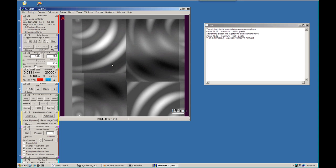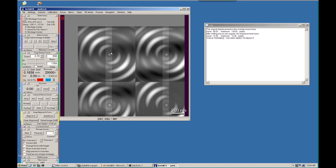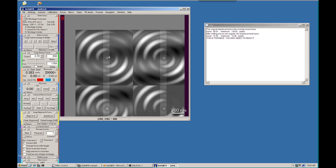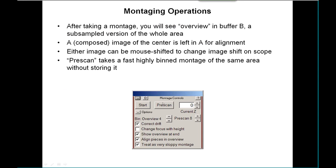Either one of these images can be shifted to impose image shift on the scope. More usefully, we can shift the overview image in B and adjust the overall alignment. That capability, together with this pre-scan button here, lets you position yourself because pre-scan lets you take a fast, highly-binned montage of the same area without storing it.